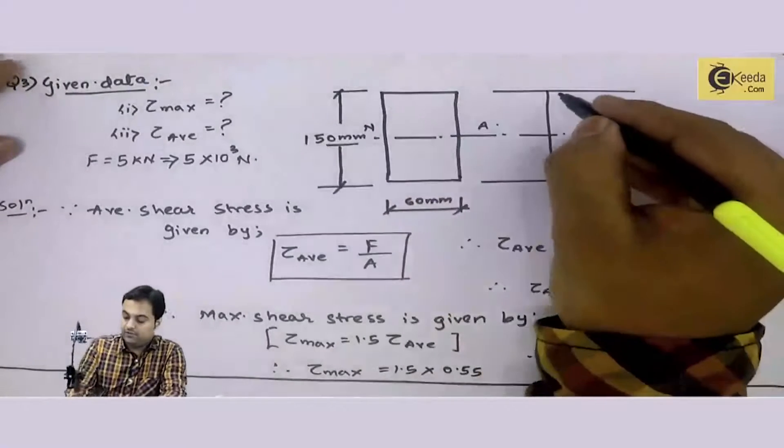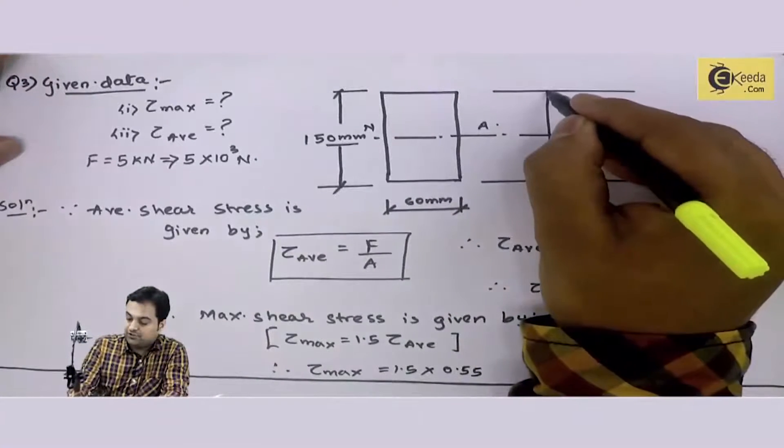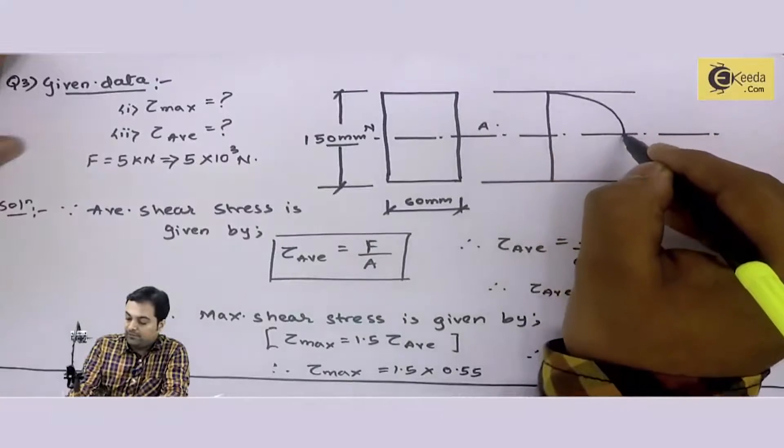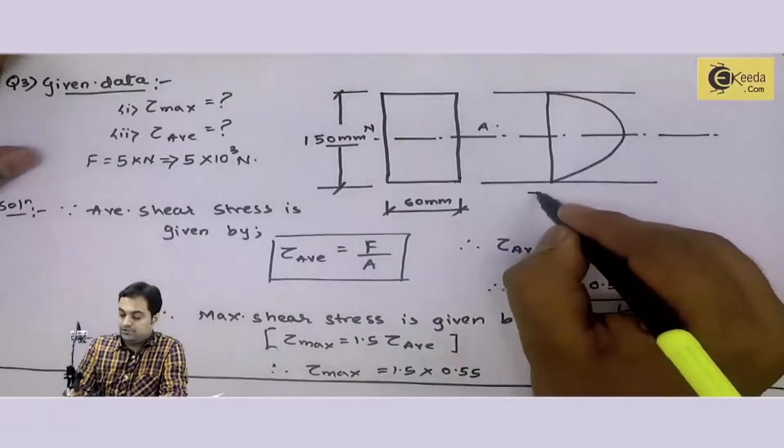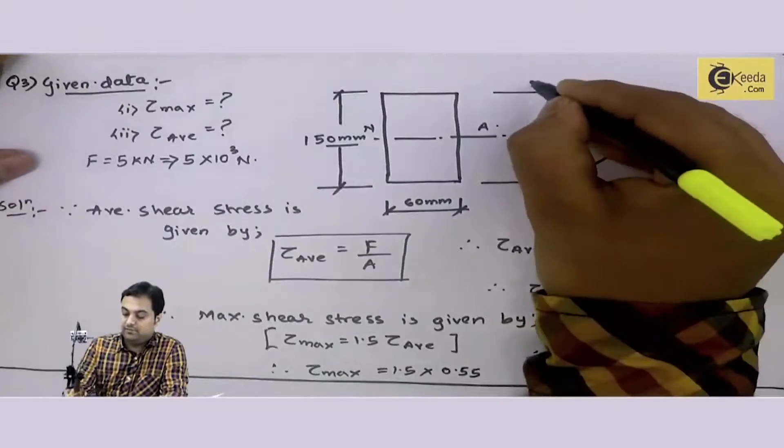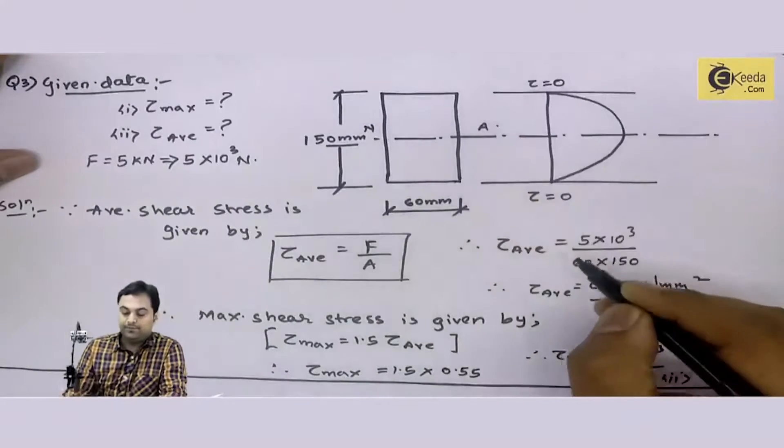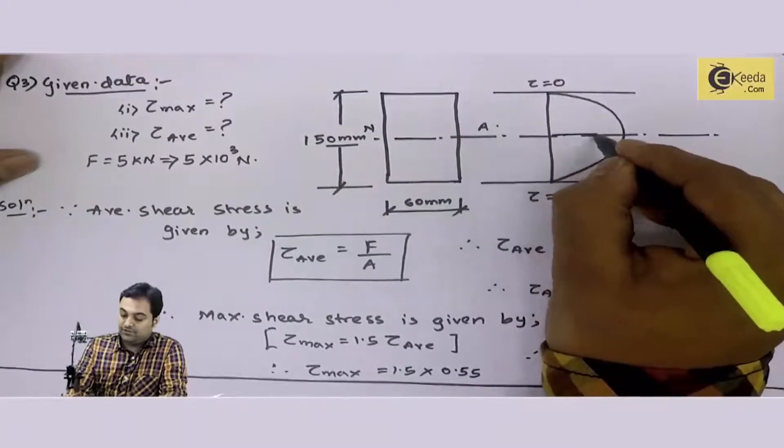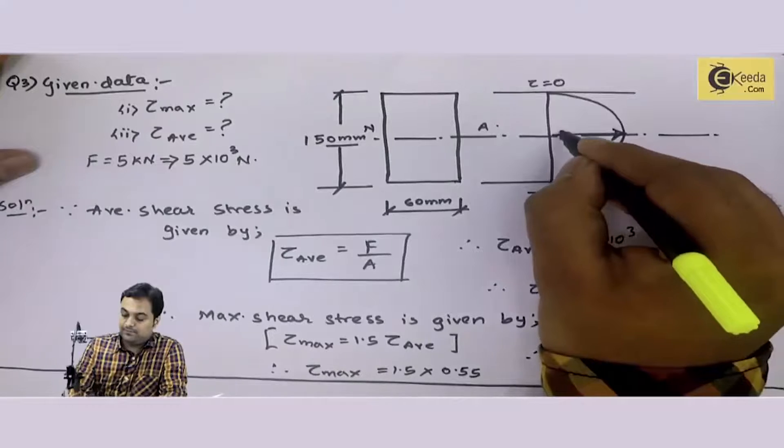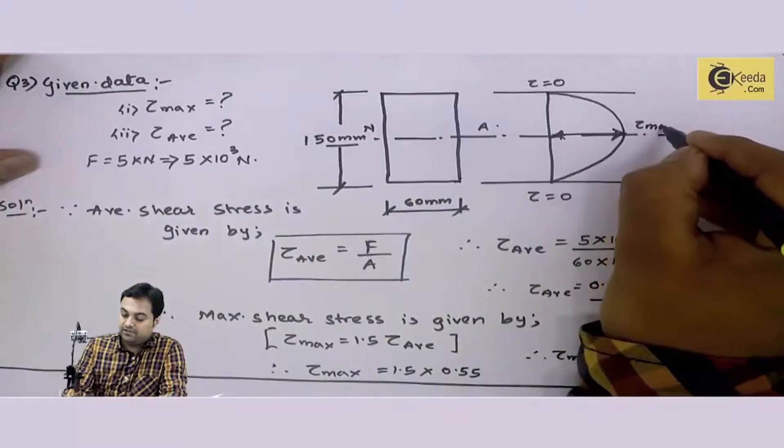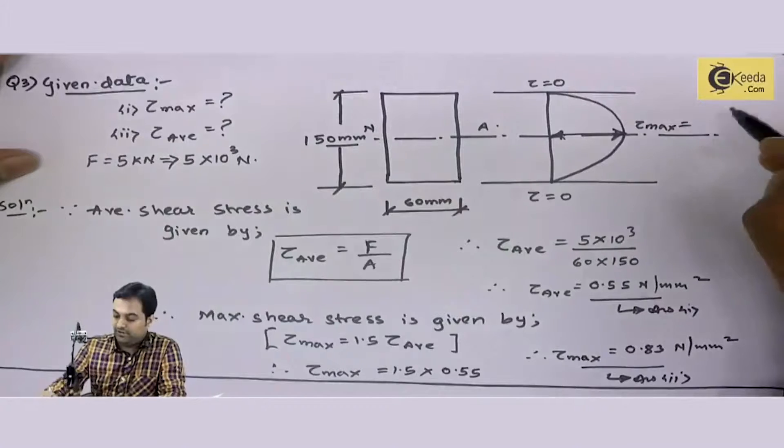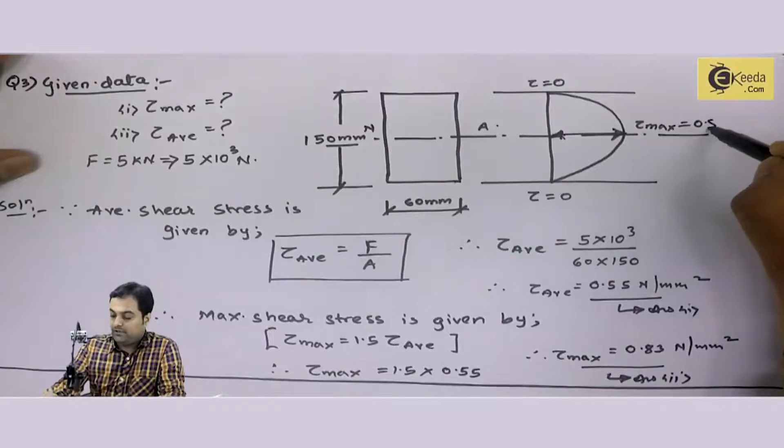And since we know for a rectangle, the shear stress distribution is in the form of a parabola. Shear stress at extreme ends are zero. Shear stress is maximum at the center, and this tau max at the center is 0.83 Newton per mm square.